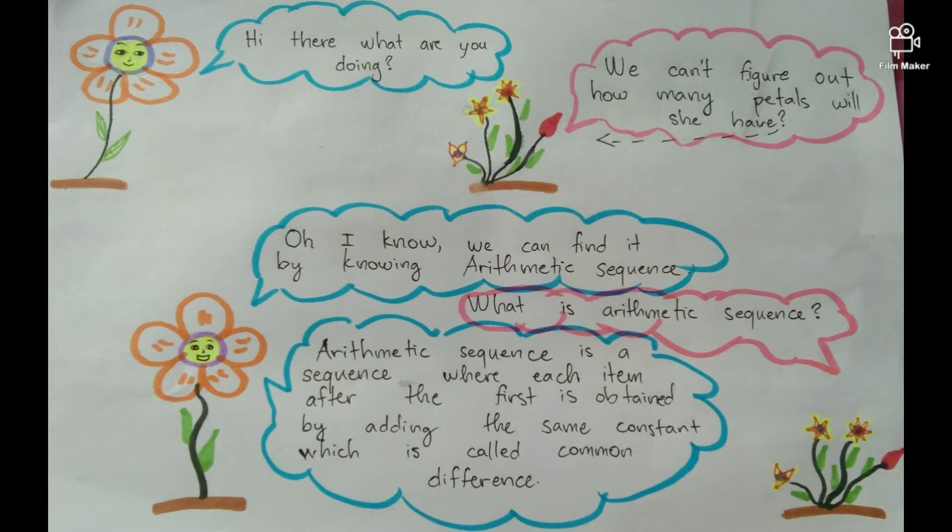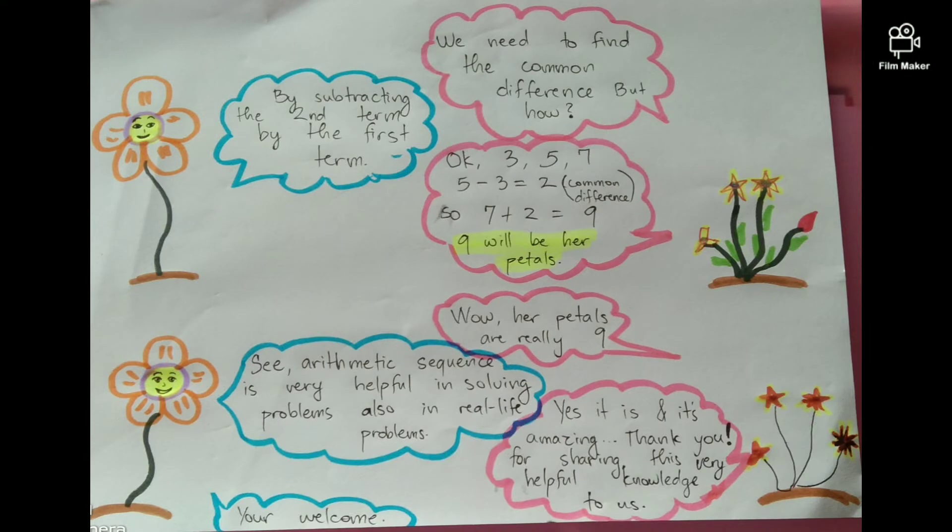Arithmetic Sequence is a sequence where each item after the first is obtained by adding the same constant, which is called Common Difference. We need to find Common Difference, but how? By subtracting the second term by the first term.